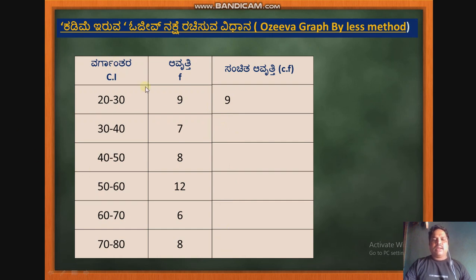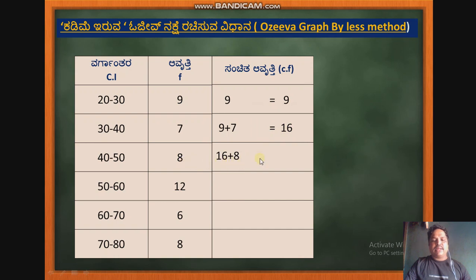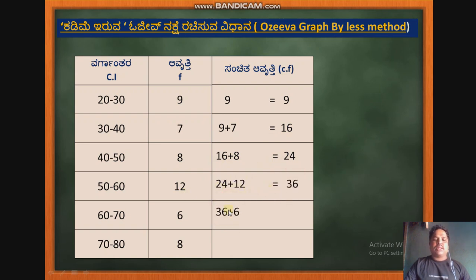So I will put this 1 to the top. 9 plus 7 equal to 4. If you put this 1 to the top, it will change to 6.